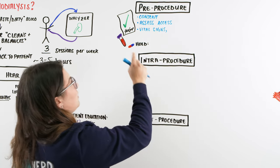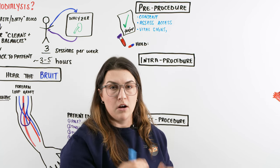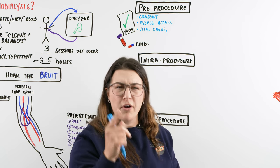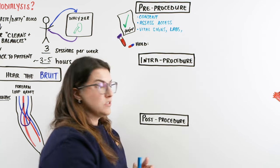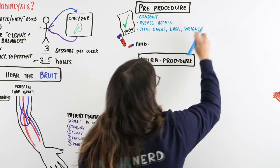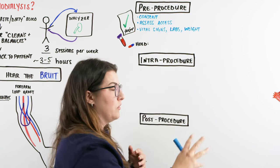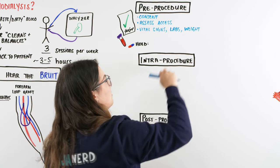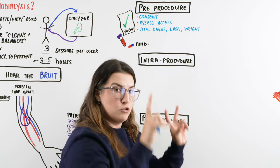During vital sign assessment, blood pressure and temperature are especially important. We take labs to check baseline BUN, creatinine, electrolyte levels, and anticoagulant levels. One of the most important pre-procedure steps is weighing the patient, since there will be fluid and electrolyte shifting during dialysis. We want to make sure the weight they come in at is very similar to what they leave at — not too dry and not too wet.